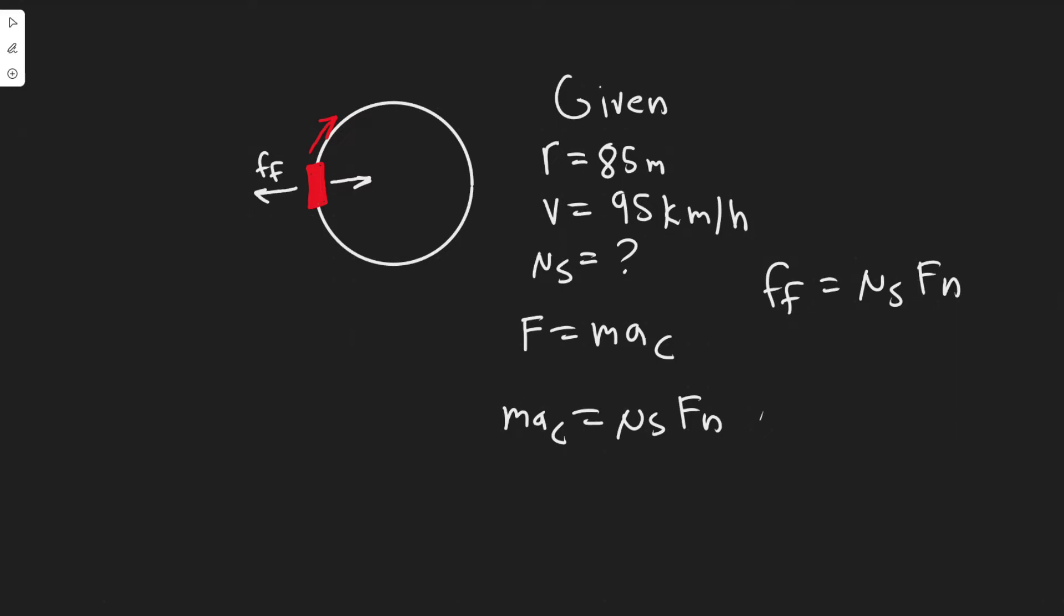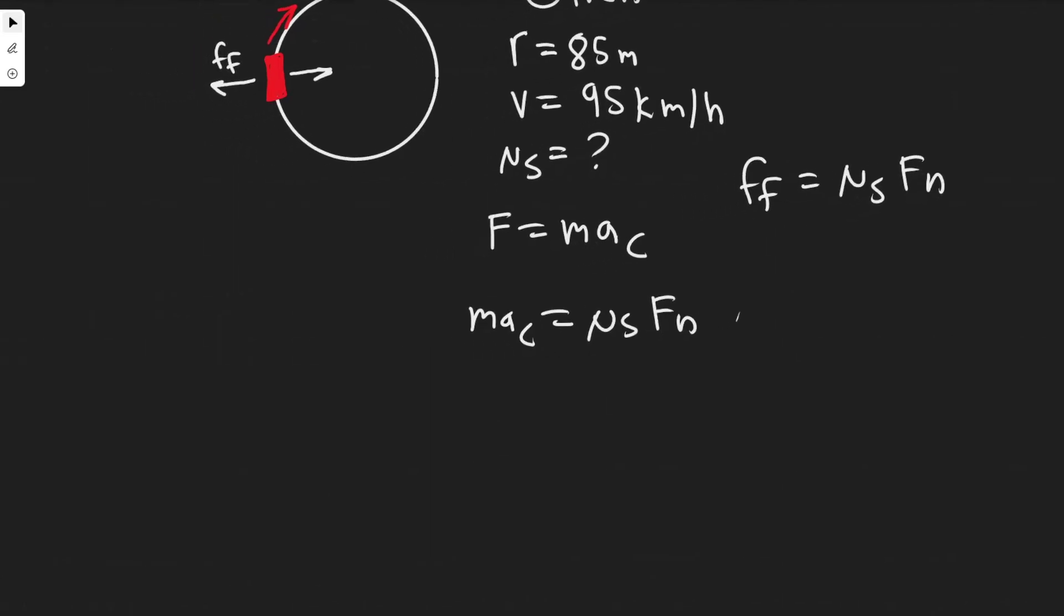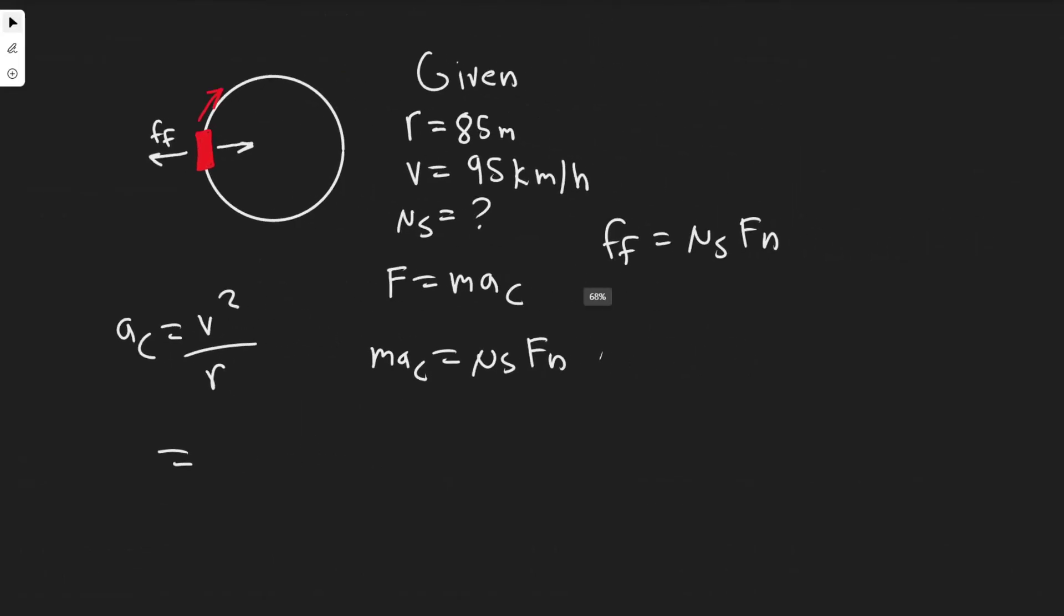How do we find the centripetal acceleration and the normal force? Let's start with the centripetal acceleration. They give us information such as velocity and radius, so I know aᴄ = v²/r. Keep in mind though that the velocity must be in meters per second because this is in meters.